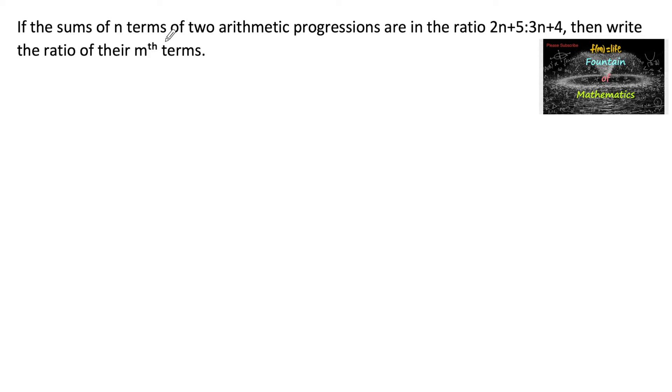If the sums of n terms of two arithmetic progressions are in the ratio 2n plus 5 is to 3n plus 4, then write the ratio of their mth terms.